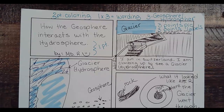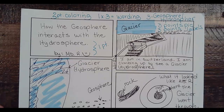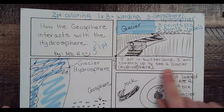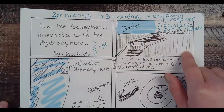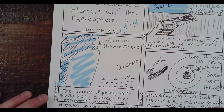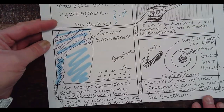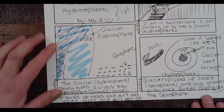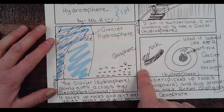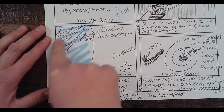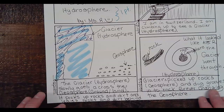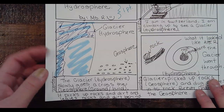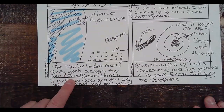Sometimes the railing would be on your side going up, and sometimes on the other side for people going down. Anyway, this is me in Switzerland climbing up to see a glacier. The glacier is the hydrosphere, and the mountain around it is the geosphere. My next picture showed you the glacier, which is the hydrosphere. The stuff that came out of and was left behind the glacier is the geosphere — the dirt, rocks, and pebbles.